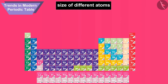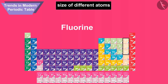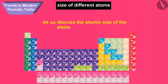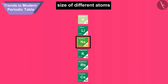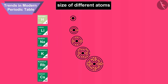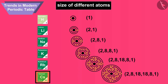Thus, in any period, the alkali metal atom like lithium, sodium, potassium, etc. is the biggest in size, whereas the halogen atom like fluorine, chlorine, bromine, etc. is the smallest in size. Going down the group, the size of the atoms increases. So, the smallest atomic size will be found at the top of a group, whereas the largest atomic size is found in the lowest part of the group.